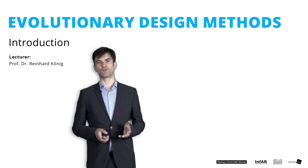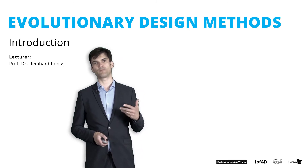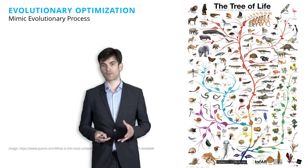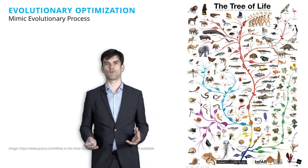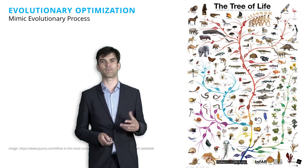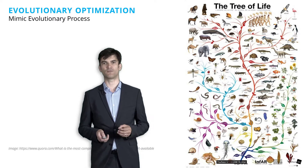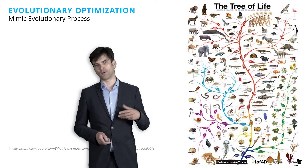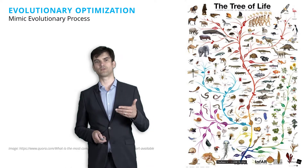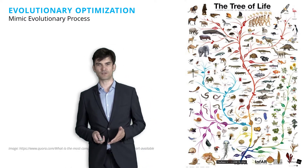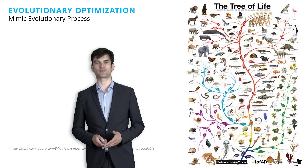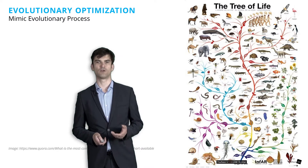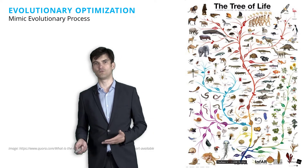We use evolutionary optimization motivated by the natural processes, by the creativity of nature. Everything that has been created in our world — the biological artifacts like plants and animals — are the results of the most creative process that we know: evolution. In our course we try to mimic this evolutionary process to integrate it in our design thinking and design processes, for the computation of creative, innovative, and new designs.